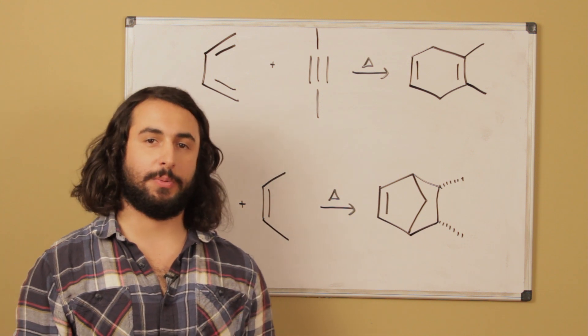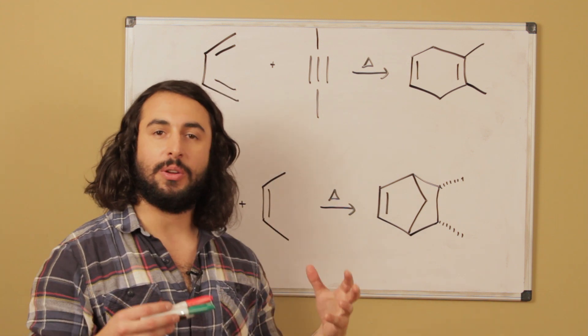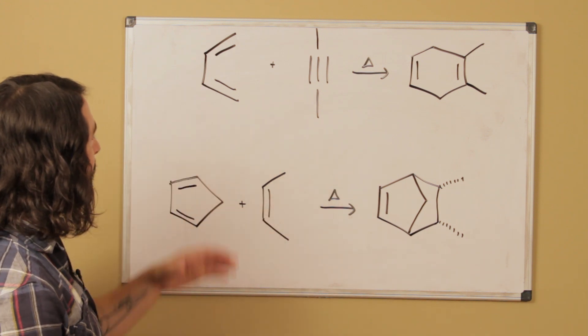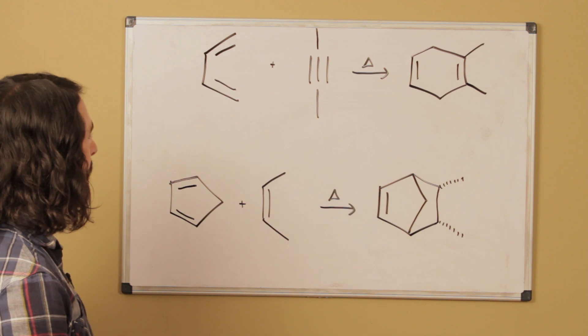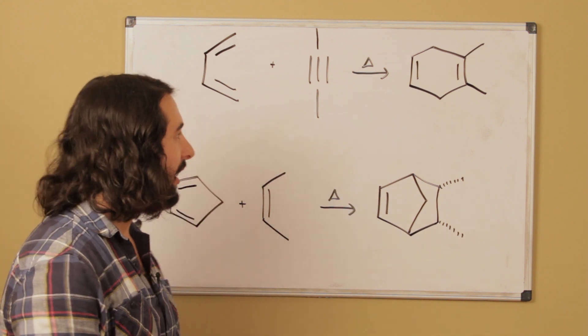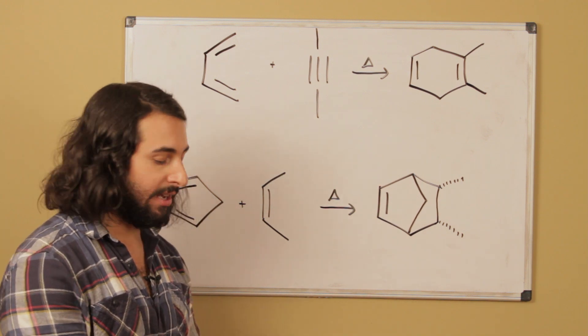Okay, so with Diels-Alder reactions it's very important to understand that we're always going to be reacting a diene and a dienophile. So here's our diene meaning we have two double bonds and then a dienophile is something else that has at least one pi bond and so typically that's going to be an alkene but we can also have an alkyne dienophile.